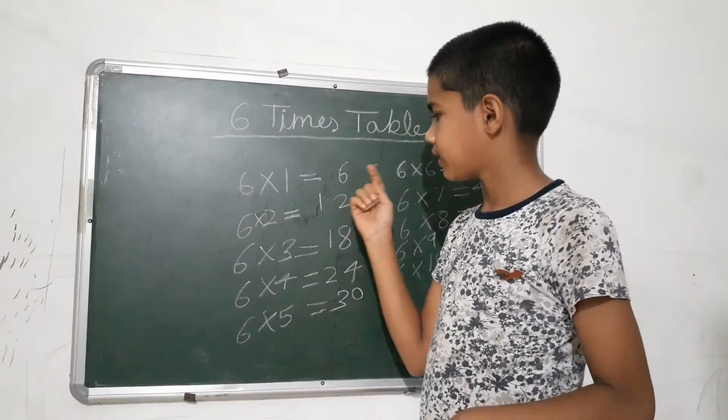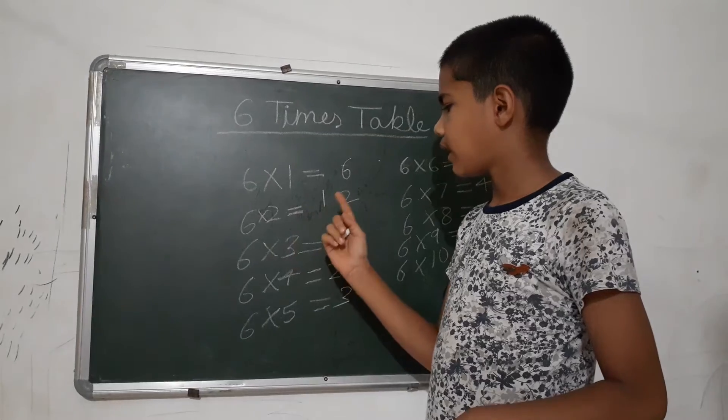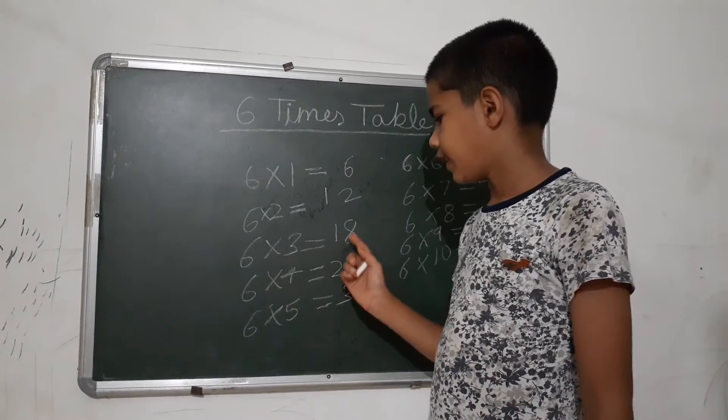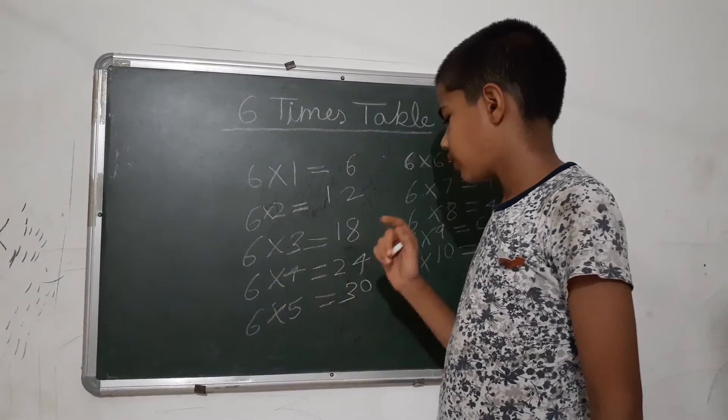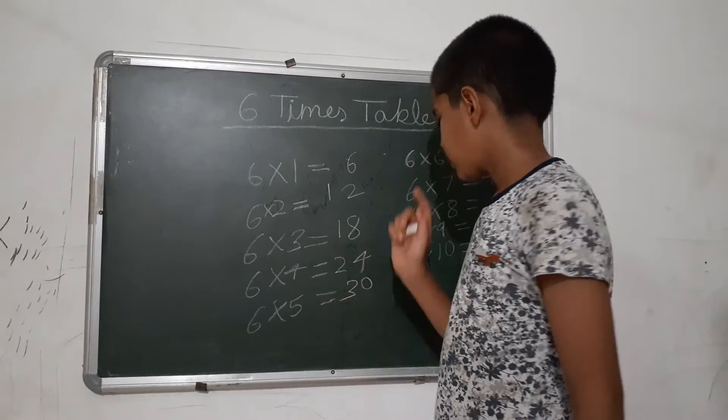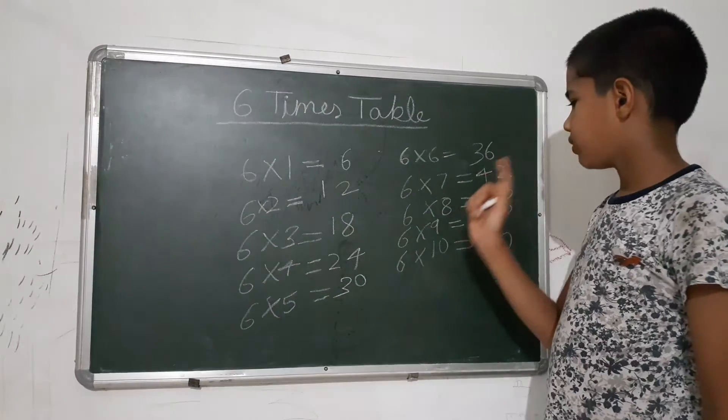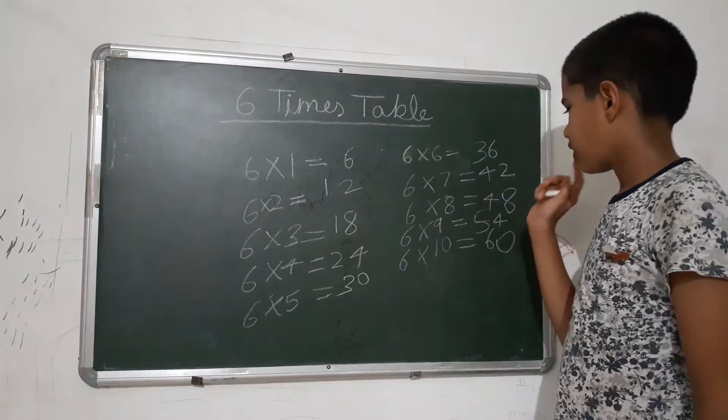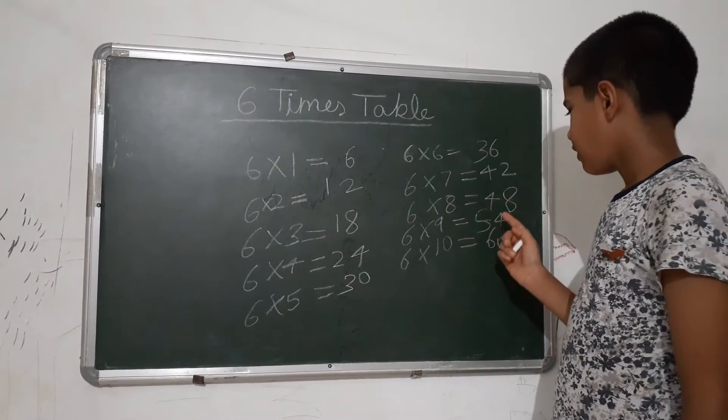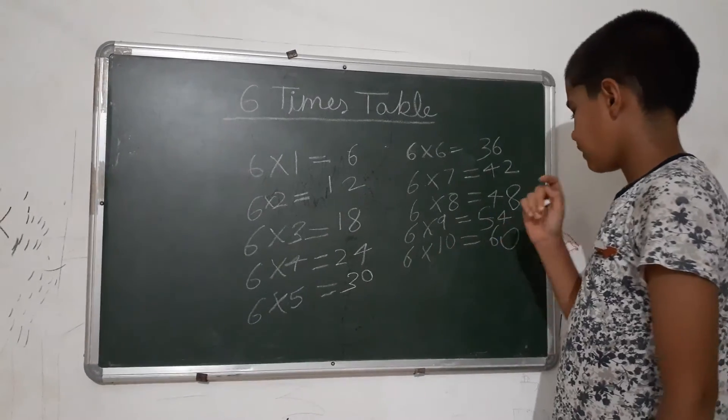6 times 1 is 6, 6 times 2 is 12, 6 times 3 is 18, 6 times 4 is 24, 6 times 5 is 30, 6 times 6 is 36, 6 times 7 is 42, 6 times 8 is 48, 6 times 9 is 54, 6 times 10 is 60.